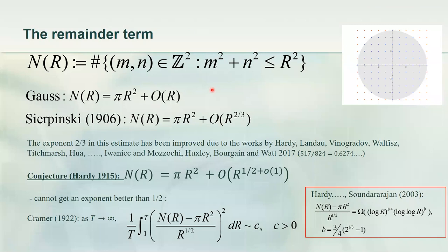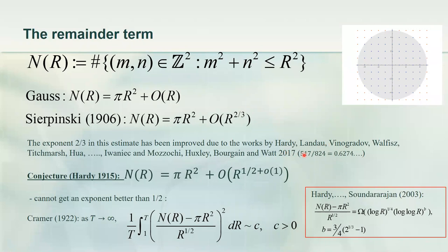If you expand what these squares are, you get π r² over here, and the difference would be something like π times r. This says that the difference between the number of lattice points — which is the area of the polygon — and the area of the disk is at most the circumference of the disk. So the main term is the area and the remainder term is at most the length of the perimeter. People quickly understood that the perimeter is not the right answer, and there was a race to improve the remainder term.